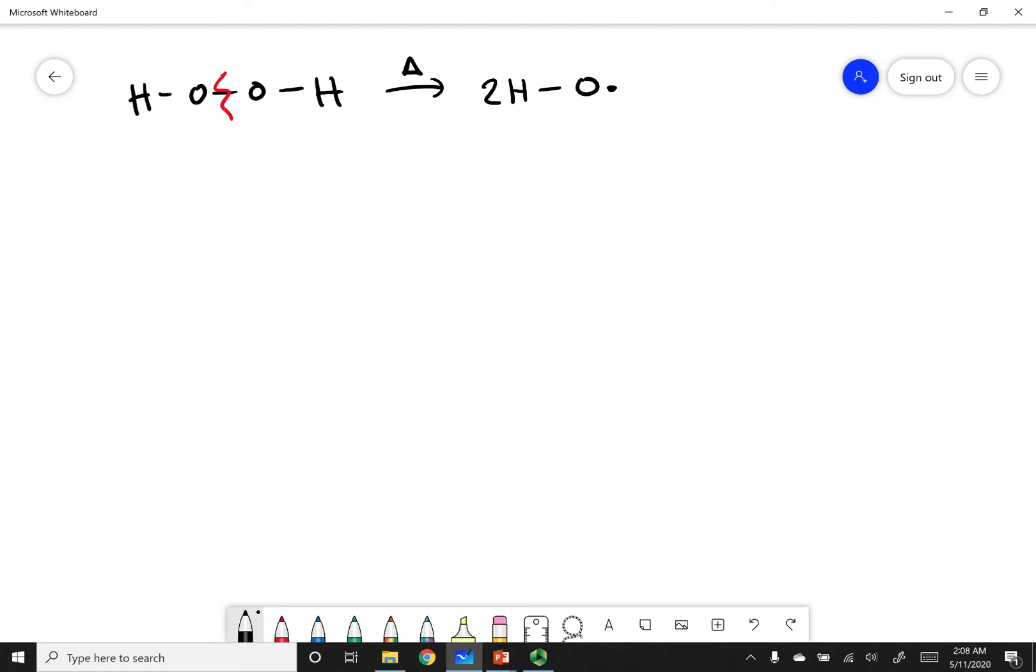Now, this free radical is an unpaired electron. Unpaired electrons are very reactive. So I have this unpaired electron and it doesn't want to be an unpaired electron. It wants to go ahead and find another electron to pair up with.